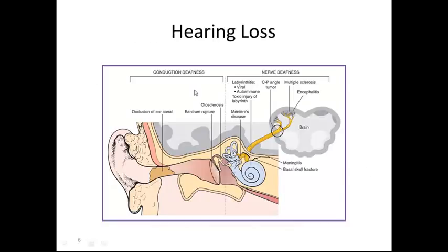Conduction deafness of the outer ear can result from an occlusion of the ear canal, commonly known as cerumen blockage. There can also be a rupture of the eardrum if there is an increase in pressure or an object that obstructs the eardrum. Otosclerosis, where there is a narrowing of the bones in the inner ear, is another cause.